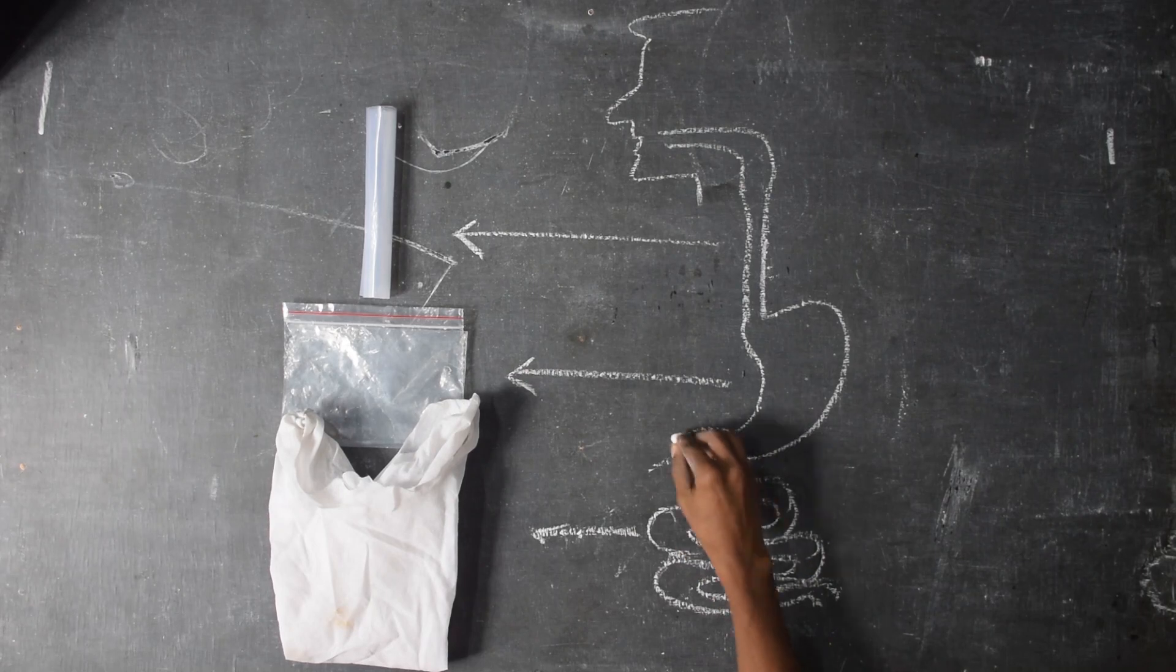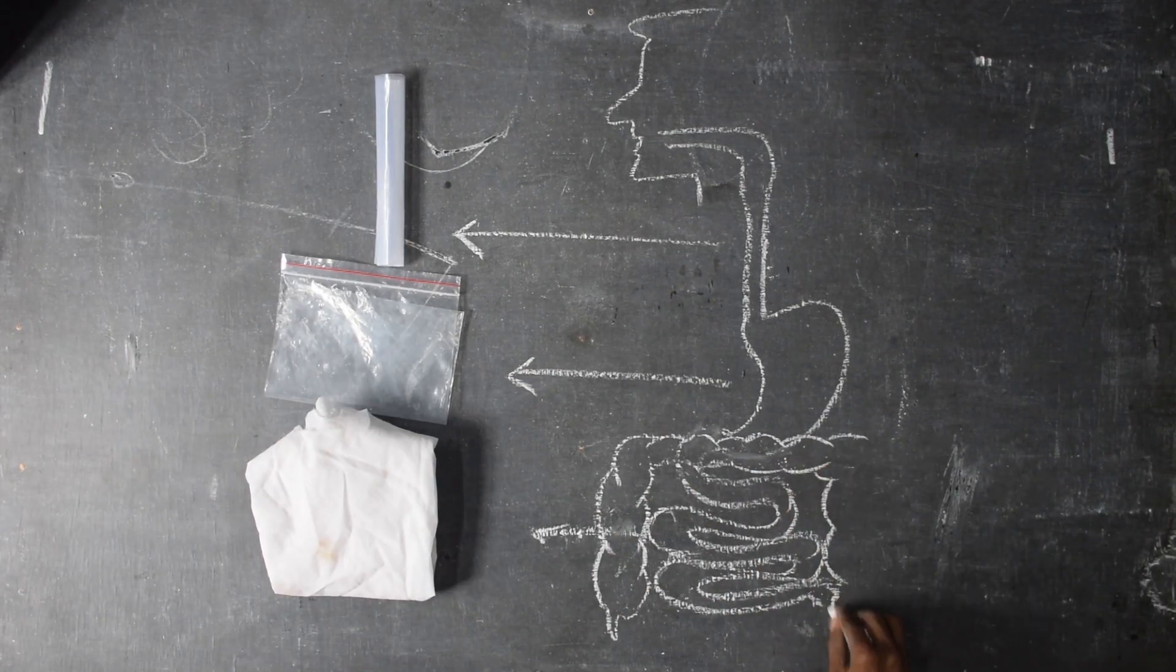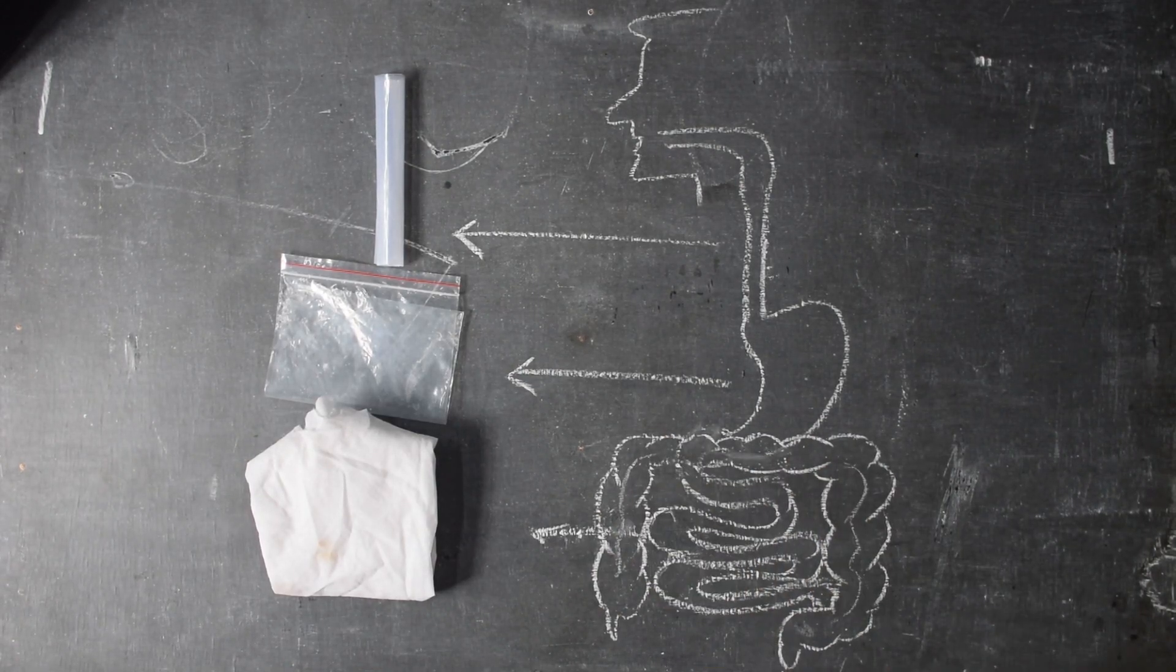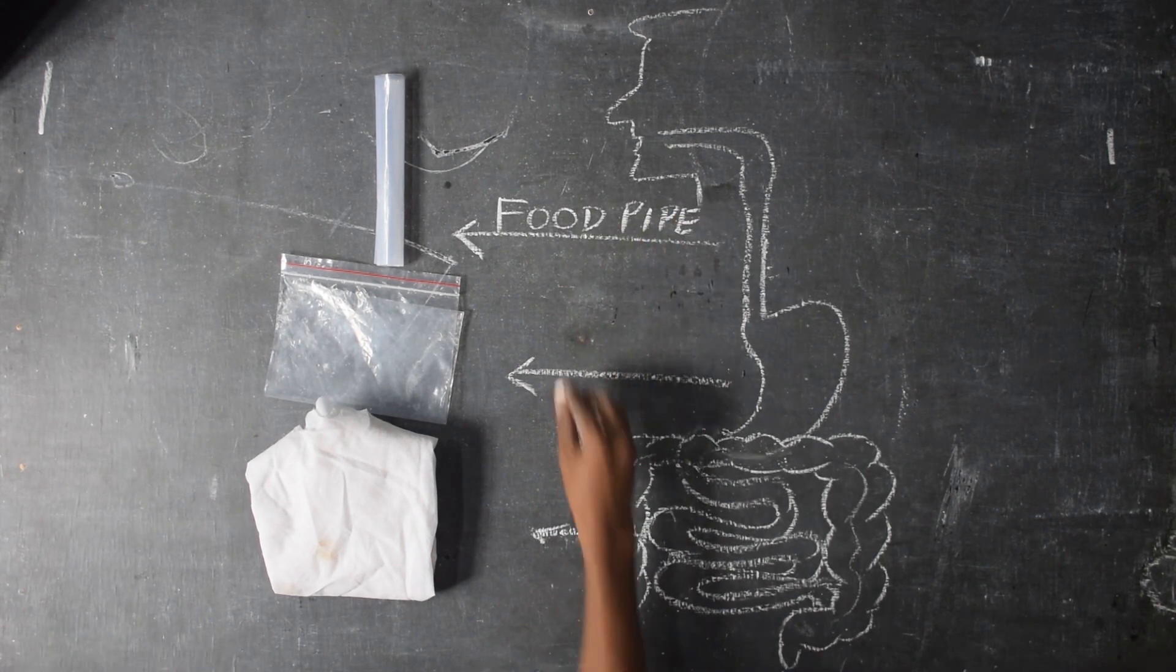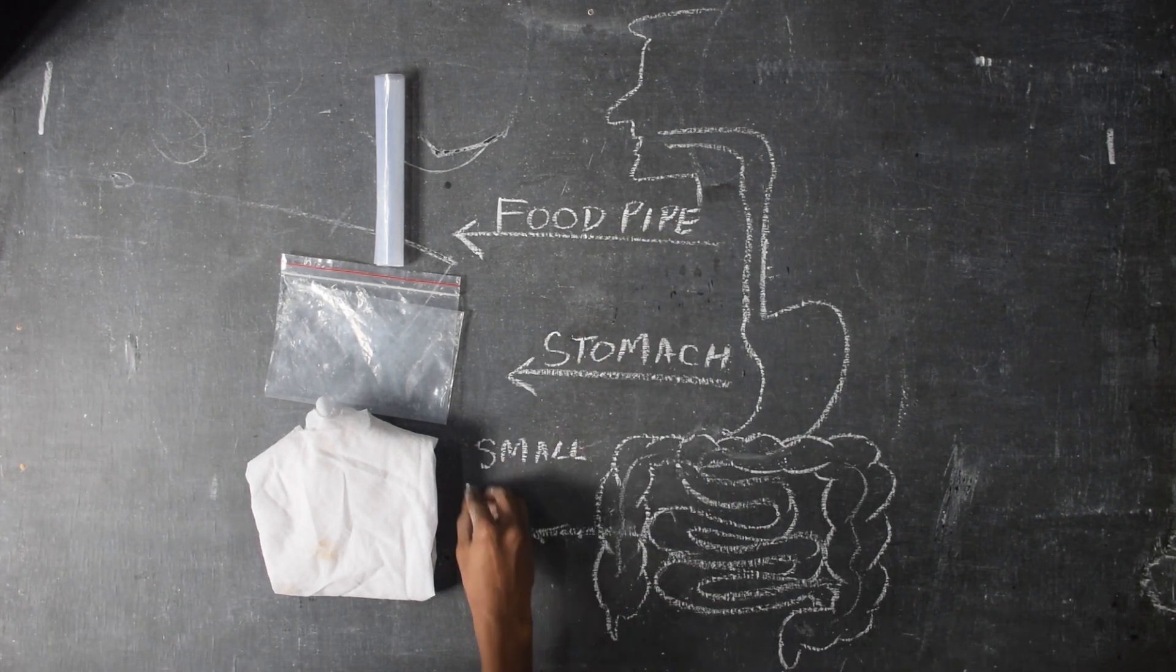For this, we will be using a rolled plastic bag as the food pipe, a ziplock bag as the stomach, and a small cloth bag as the small intestine.